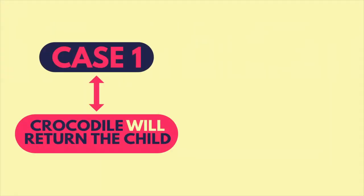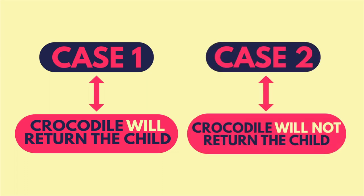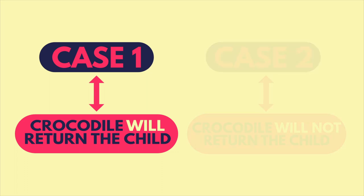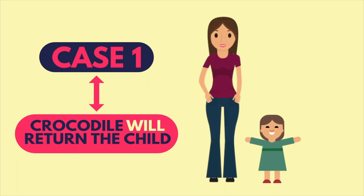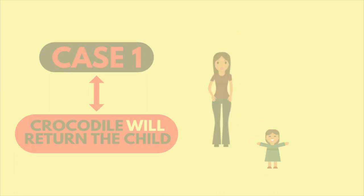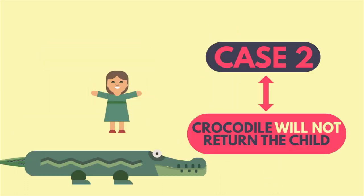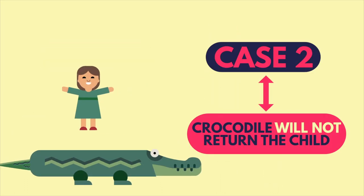Now, there are two things that can happen. A mother can either say that the crocodile would return her child, or not. In the first case, if the mother guesses correctly, she gets her child back, and if she's wrong, the crocodile keeps the child. Looks like there's no problem, right?